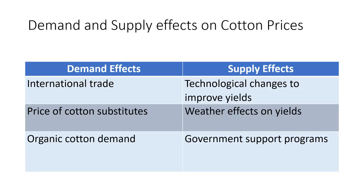A table summarizes the main demand and supply effects on cotton prices. On the demand side we have international trade, price of cotton substitutes, and organic cotton demand. On the supply side we have technological changes, weather, and government support programs. I describe each in detail next.